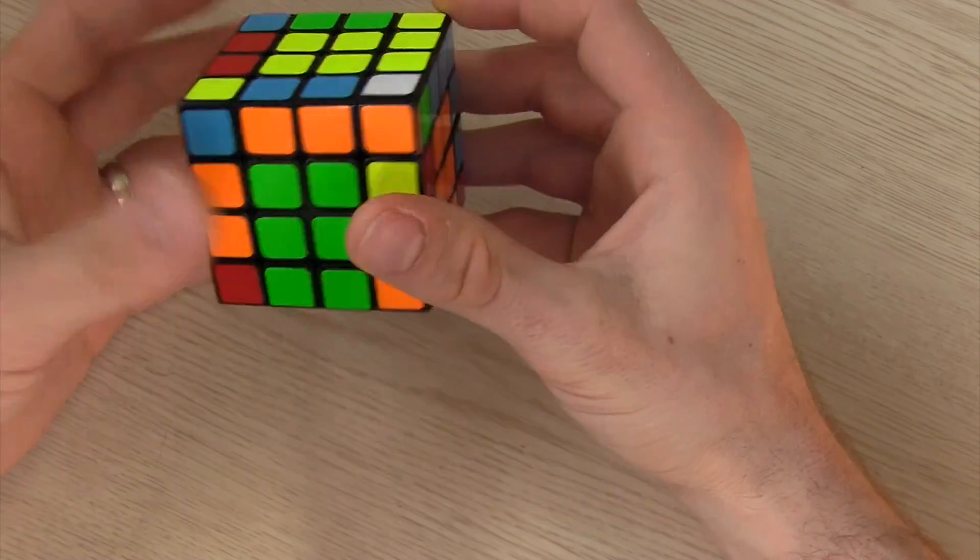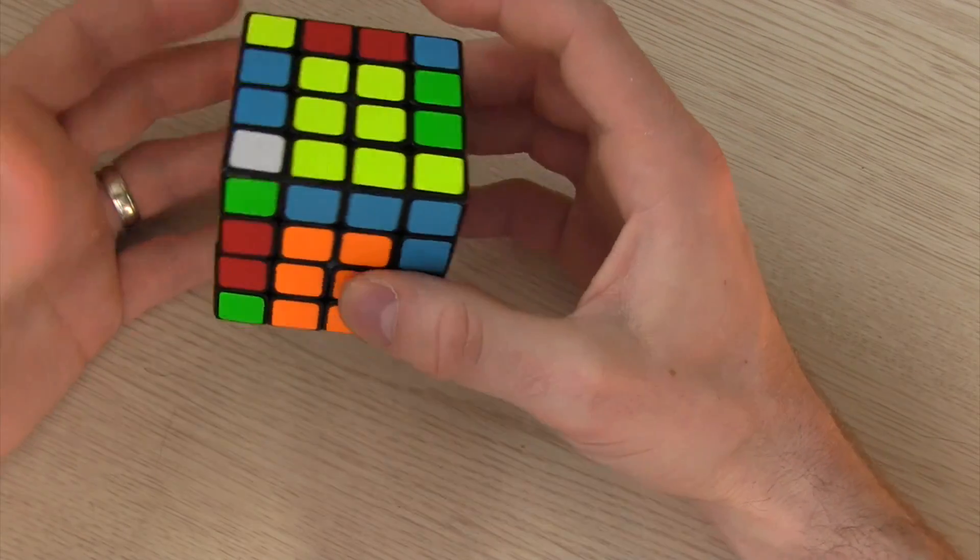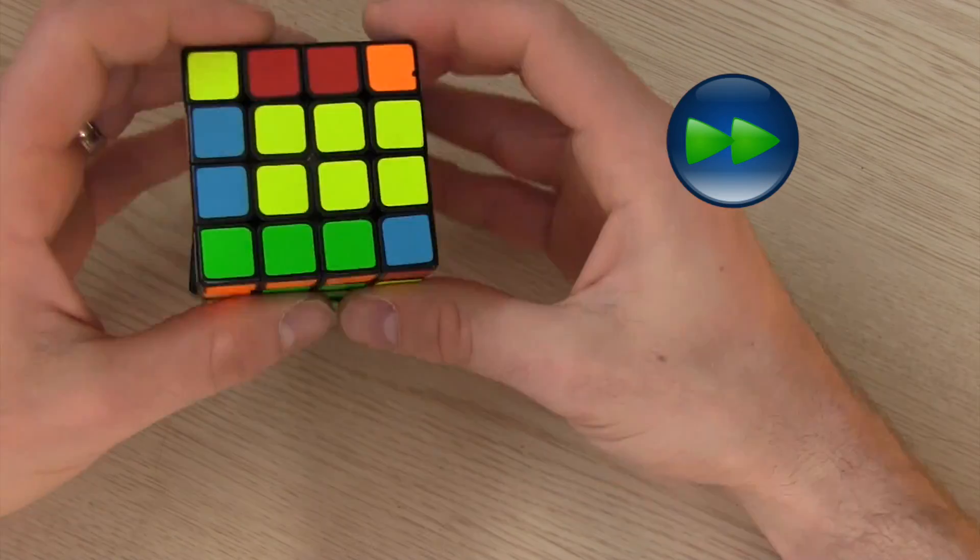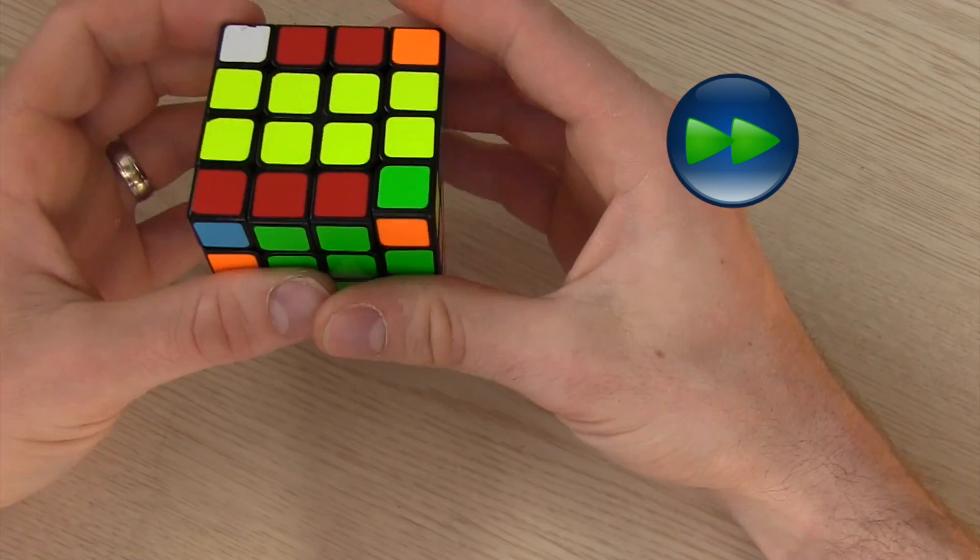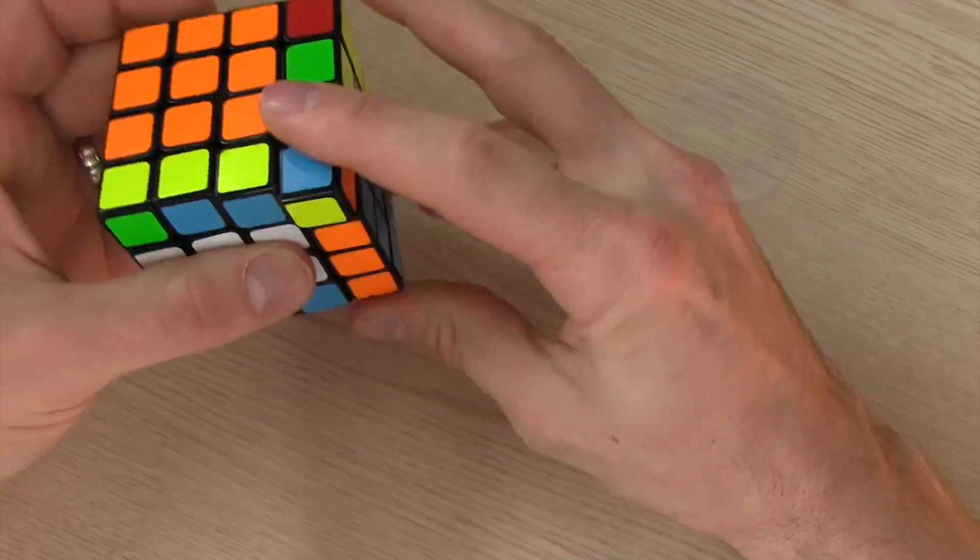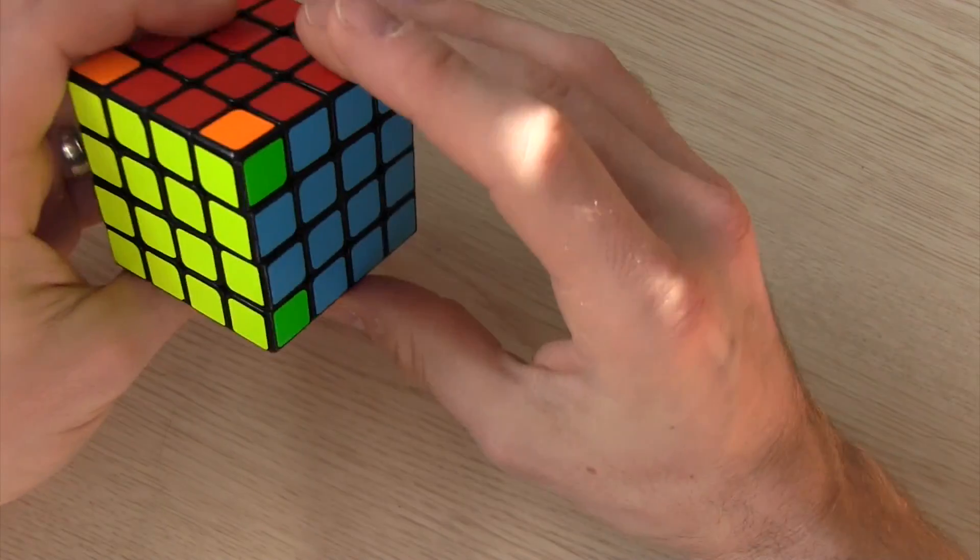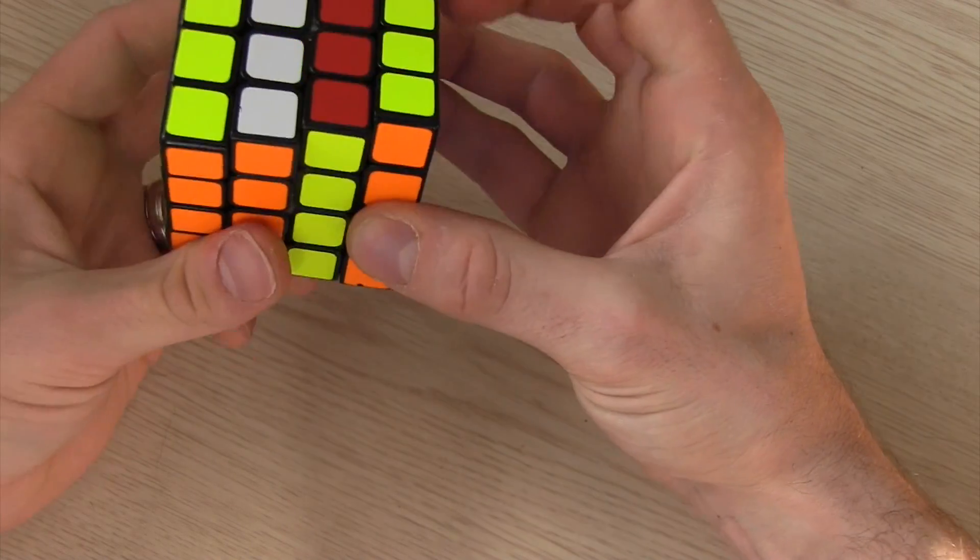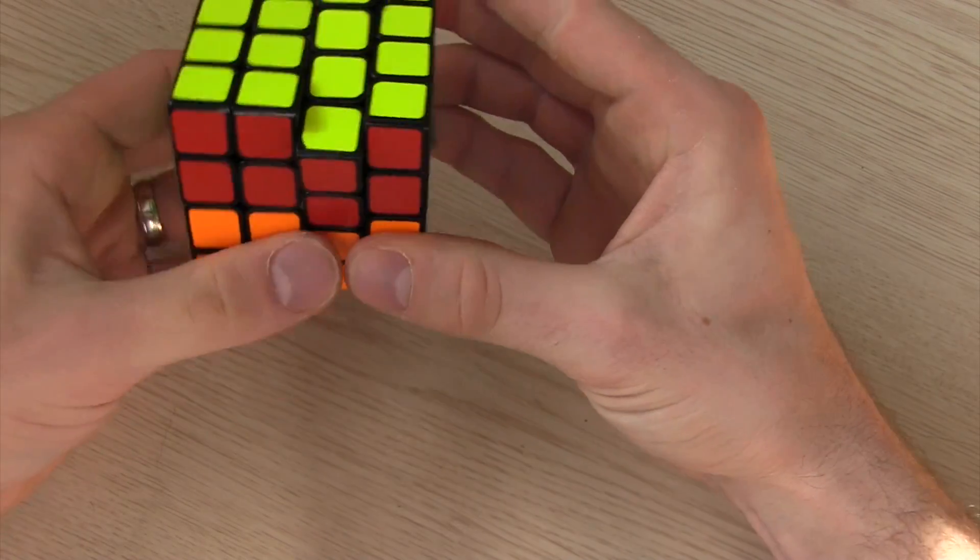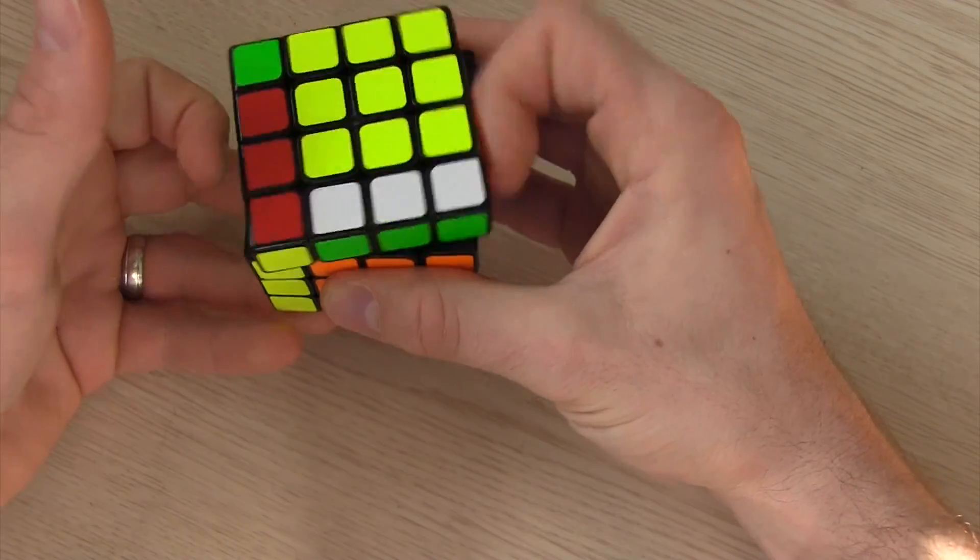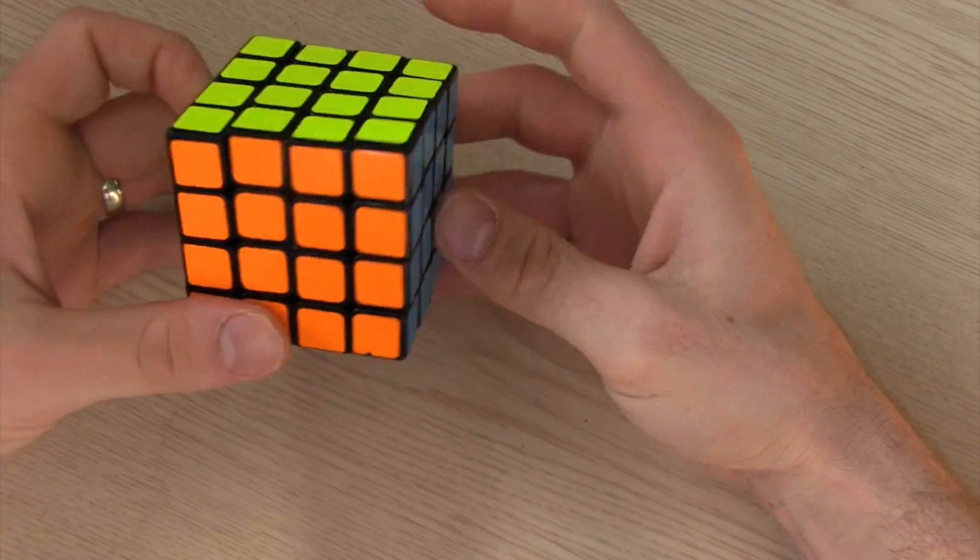So now that the edges are all done then you just solve it normally like a 3x3. And I have no OLL parity. Looks like I do have a PLL parity. And that's it.